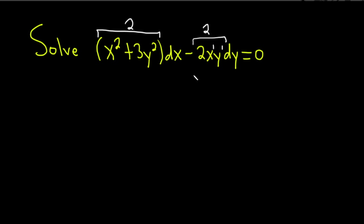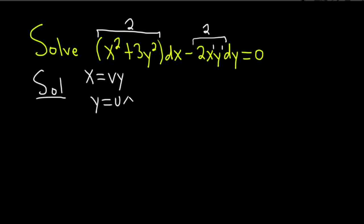There's a more formal way to determine this, but this always works. Now we have to make a substitution. There are two substitutions we can make: we can either let x equal vy, or we can let y equal ux. Typically you want to pick the one that is simpler. Letting y equal ux gives us one term for dy versus two terms for dx, so we're going to pick y equal ux.